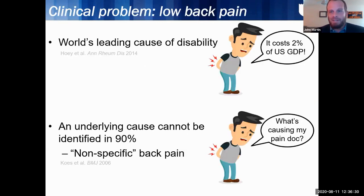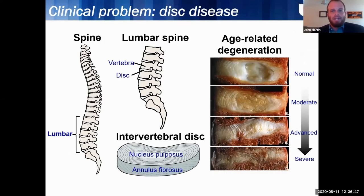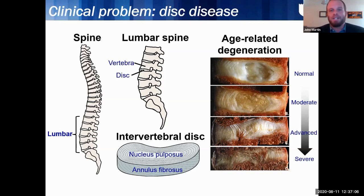Low back pain was recently credited as the world's leading cause of disability with severe socioeconomic consequences for the United States. Unfortunately, an underlying cause of back pain can't be identified in 90% of cases, leading to the often issued diagnosis of nonspecific low back pain. Low back pain is typically linked to the lumbar spine and often the intervertebral discs, which are subject to an age-related degeneration process marked by compositional and structural deterioration, as well as altered biomechanics, inflammation, and neuropathy. While these factors are often cited as links between degeneration and pain, on an individual patient basis direct links are often difficult to determine.